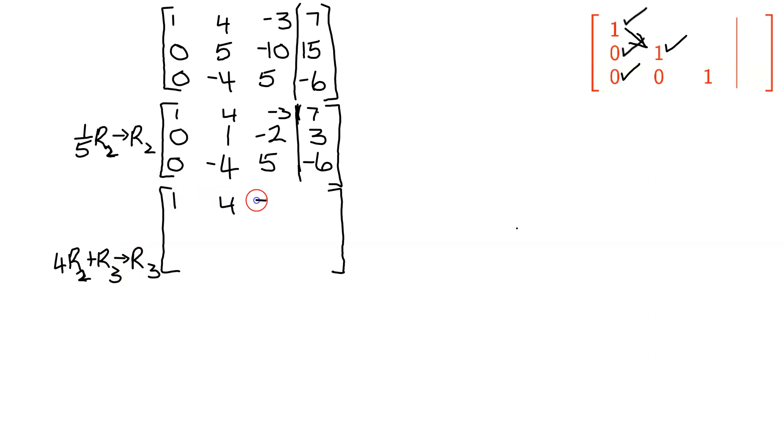Row 1 stays the same. Row 2 stays the same. And now for our scratch work for the third row, we need to take 4 times row 2. So that's 4 times this row here. 4 times 0 is 0, 4 times 1 is 4, 4 times negative 2 is negative 8, and 4 times 3 is 12. Then we're going to write row 3 directly below it, 0, negative 4, 5, and negative 6. Add them together.